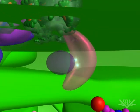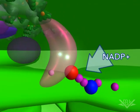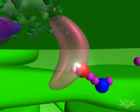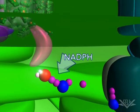After two electrons are transferred to FNR, NADPH is made by adding the two electrons and a hydrogen ion to NADP.